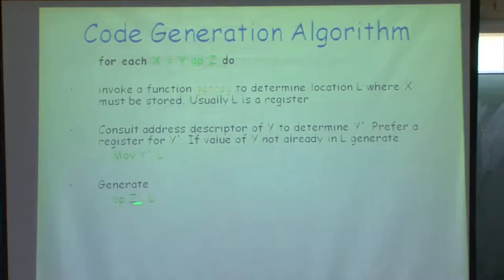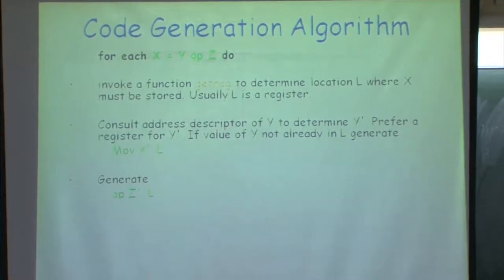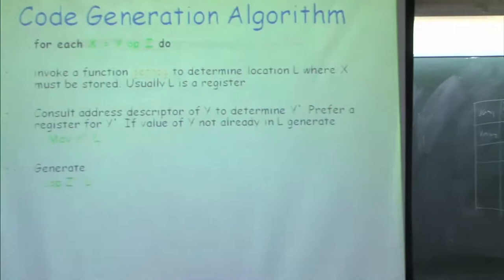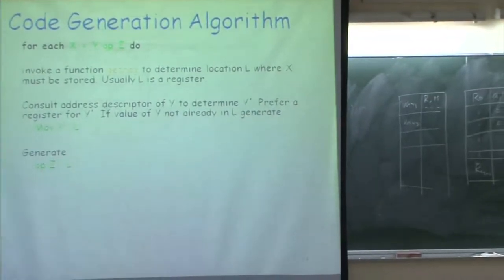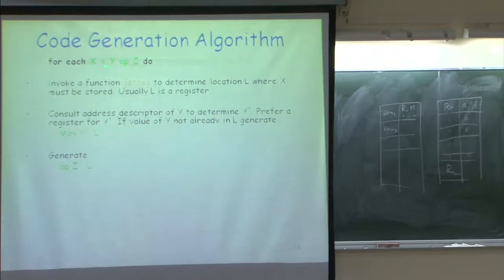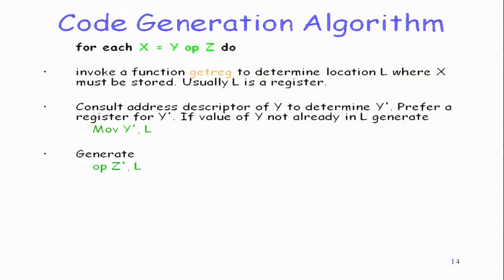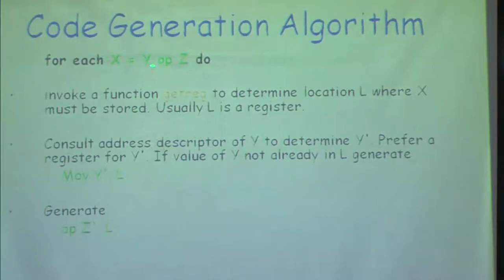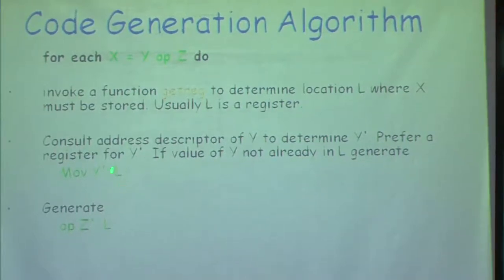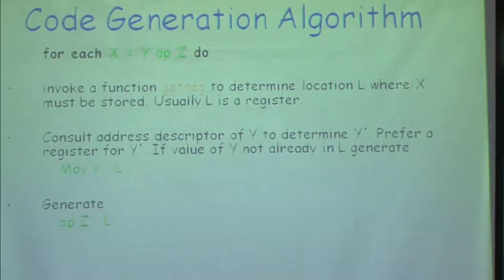If y is in R0 and z is in R1, and both have future use, getreg returns R3. We then generate: move y into R3, then add z (from R2) to R3. These are the two instructions generated. Sometimes the first move instruction is not needed if y is already in the register returned for computation of x — in that case only the second instruction is generated.